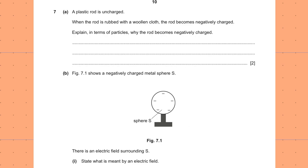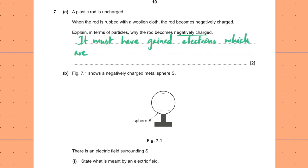A plastic rod is uncharged. When the rod is rubbed with a woollen cloth, the rod becomes negatively charged. Explain in terms of particles why the rod becomes negatively charged. For the rod to become negatively charged, it must have gained electrons — electrons which are lost by the woollen cloth.